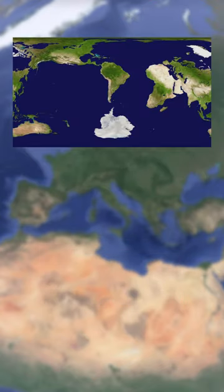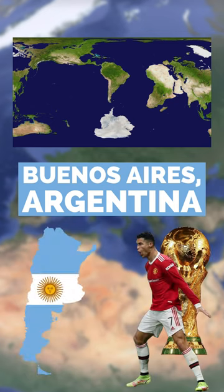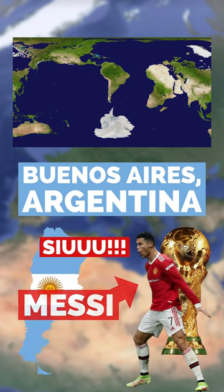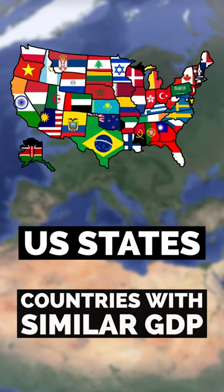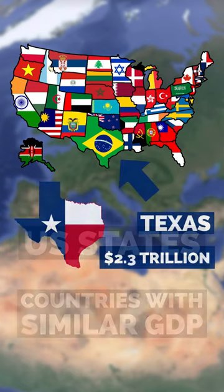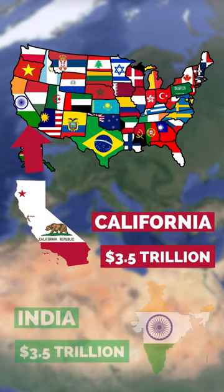This is a regular world map except it's centered around Buenos Aires, Argentina, in honor of their World Cup win. This map shows the US states compared to the country with a similar GDP. For example, Texas is comparable to Brazil and California is comparable to India.